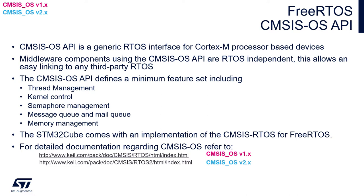We have two versions available: with STM32CubeMX and CubeIDE, CMSIS-OS v1 and CMSIS-OS v2. Here you can see the links to the Keil webpage which describes both API conventions in more detail. Within this training we will use CMSIS-OS v2 as it is much more advanced and covers much more functionality within FreeRTOS.